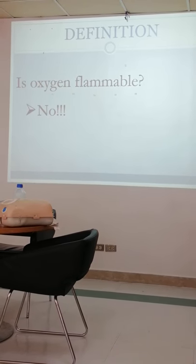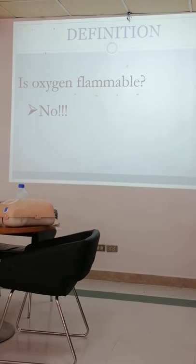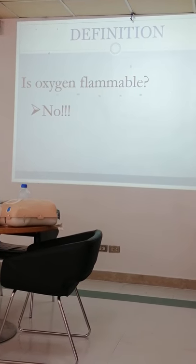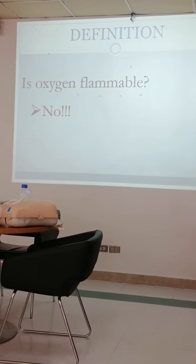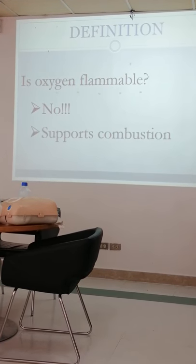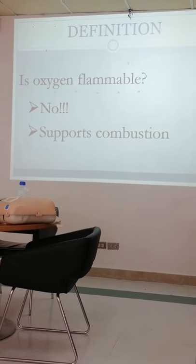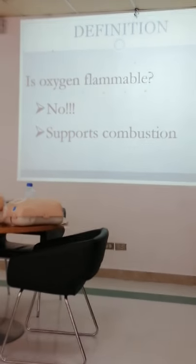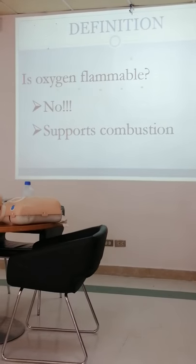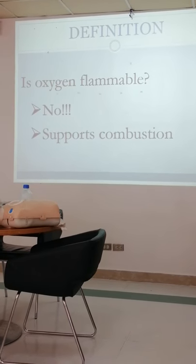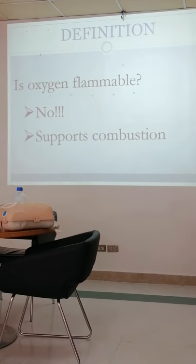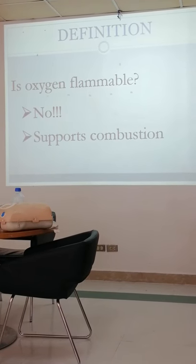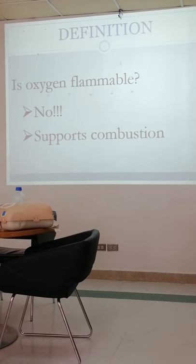But why, in fire, is oxygen involved? Because oxygen supports combustion — it's one of the key elements of fire. That's why if there is a fire, we turn off the oxygen so that the fire will not spread. It supports combustion but is not itself flammable.